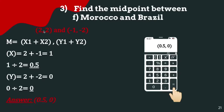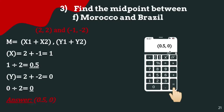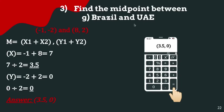Find the midpoint between Morocco (2, 2) and Brazil (-1, -2). Replacing the numbers: x = (2 + (-1))/2 = 1/2 = 0.5, and y = (2 + (-2))/2 = 0/2 = 0. The overall answer is (0.5, 0).